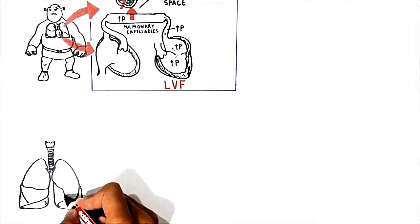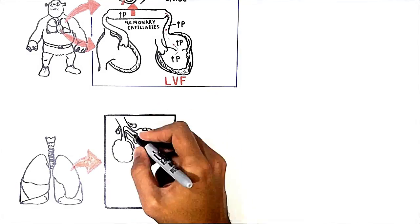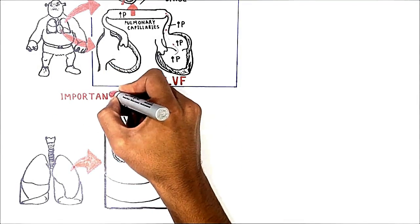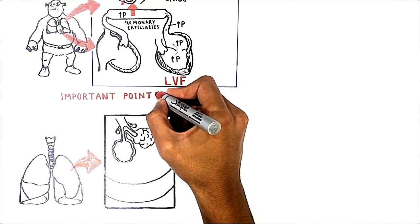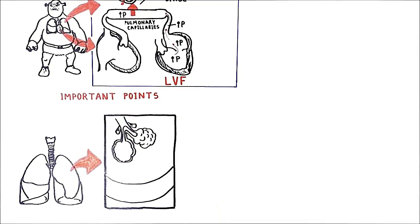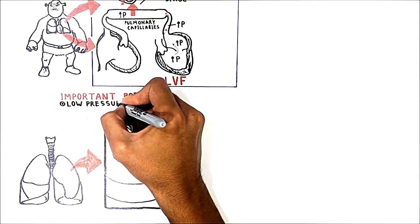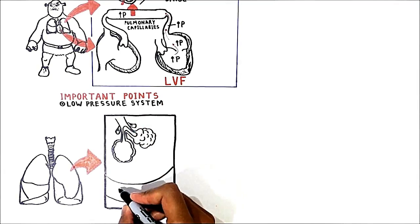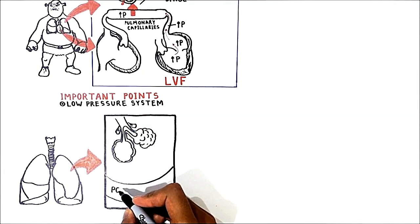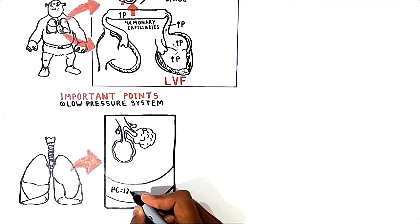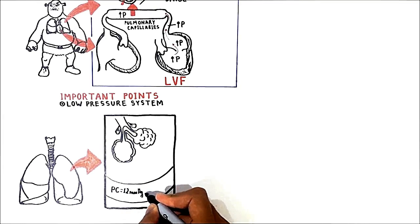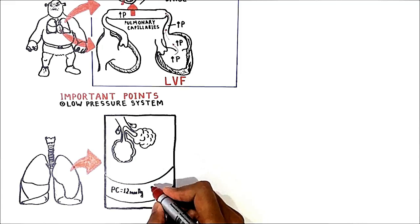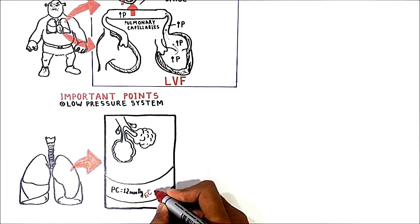It is very important to note that pulmonary circulation is uniquely different compared to systemic circulation. First, it is a very low pressure system. Under normal conditions, in pulmonary capillaries the hydrostatic pressure is approximately 12 mmHg, while the oncotic pressure is nearly 28 mmHg.